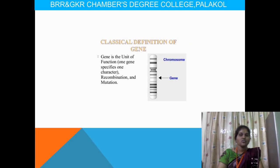The classical definition of genes was proposed by different scientists. A gene is the unit of function — one gene specifies one character. For example, the color of a human being is indicated by one gene. Melanin is a pigment coded by one gene; if expressed, the person will be dark in color. If suppressed, the person will be light in color. So one gene expresses one character.